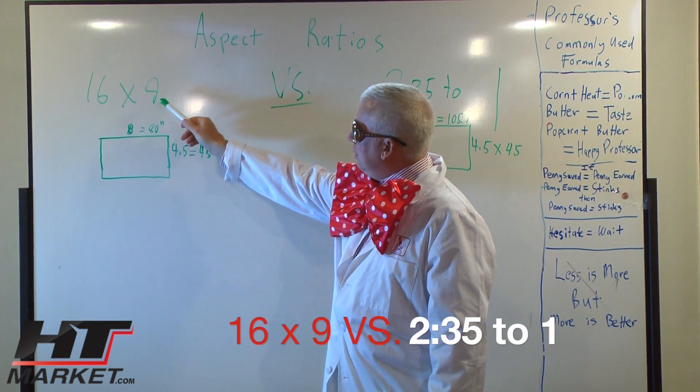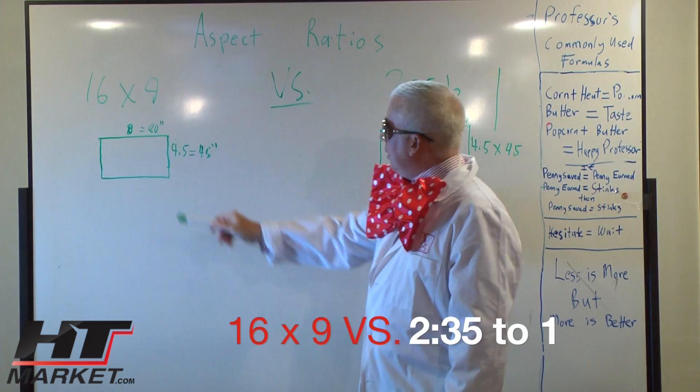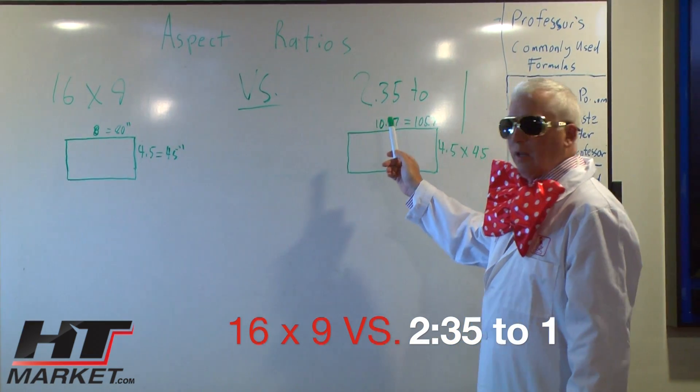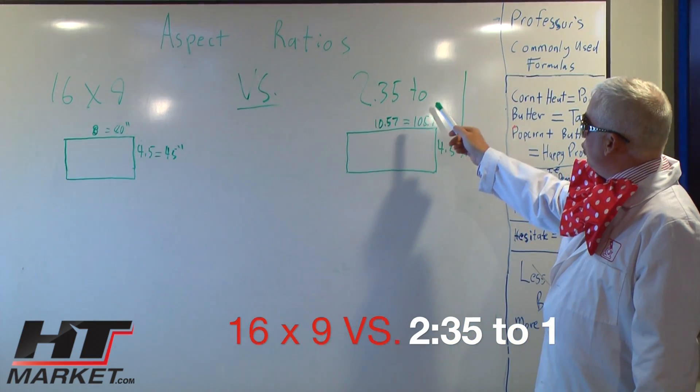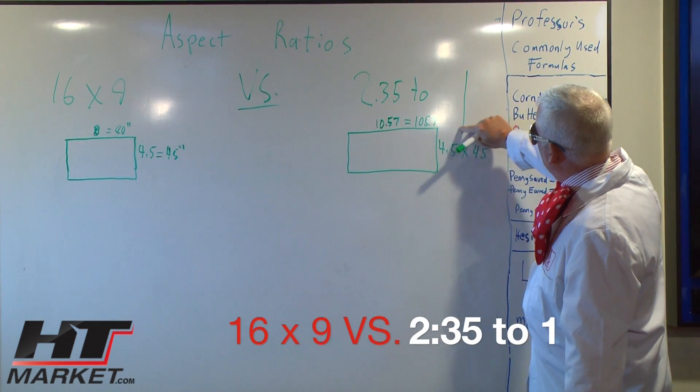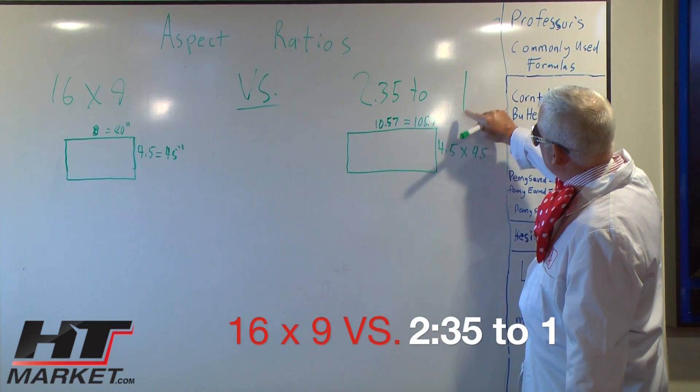Most HDTV TV sets are 16 by 9, and then you've got the new aspect ratio that a lot of people are using, the 2.35 to 1. My 1 got a little bit long. I'm going to take that off. That's a 1.